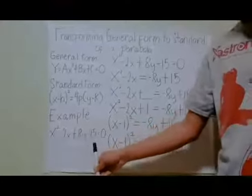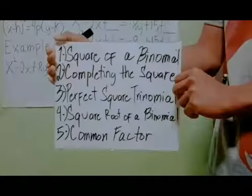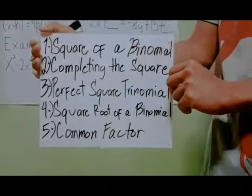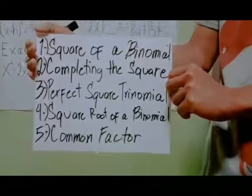So our example for today is x squared minus 2x plus 8y minus 15 equals 0. As you can see, I have prepared 5 steps on how to transform general form to standard form of a parabola.